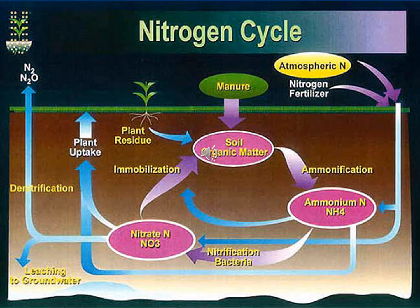Remember: the only two forms of nitrogen that can be taken up by a plant are nitrate or ammonium. The bacteria are the ones making nitrogen in organic matter available to the plant by transforming it into one of those two forms.